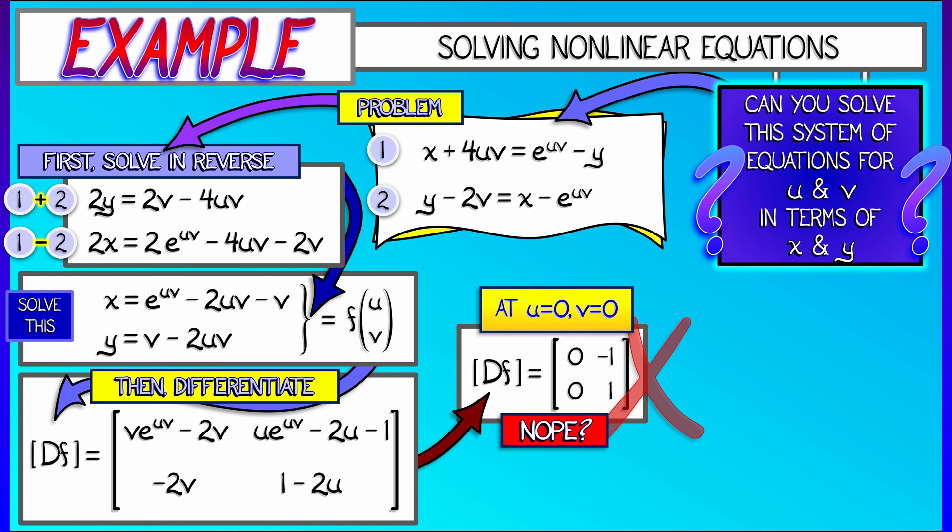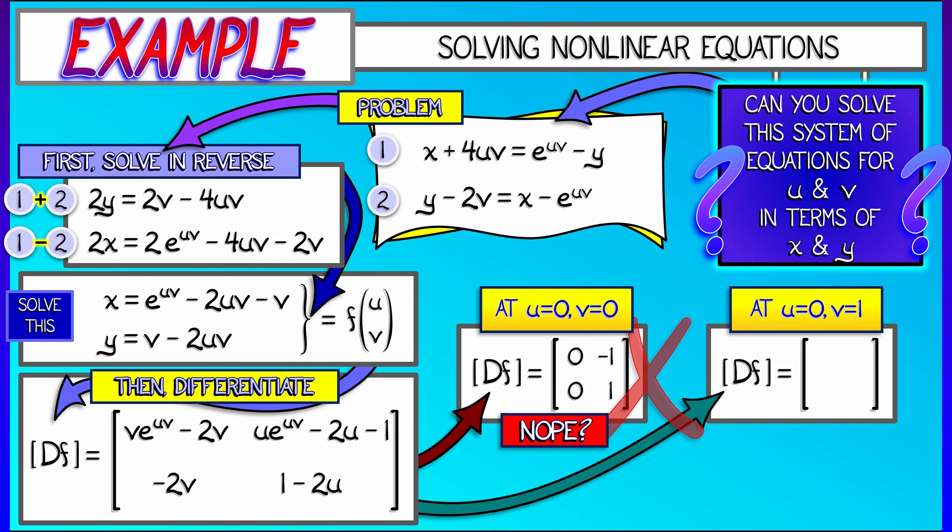Now, maybe higher order terms would help, but linear, no. On the other hand, at u equals 0 and v equals 1, I get the matrix negative 1, negative 1, negative 2, 1, which is an invertible matrix because the determinant is non-zero.